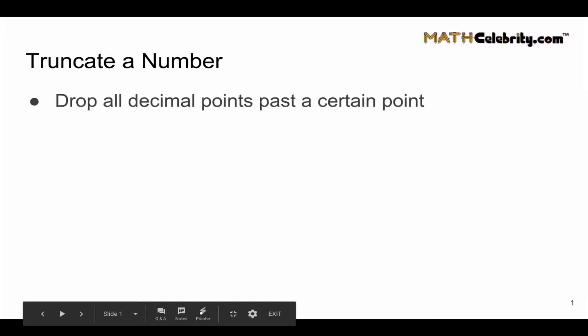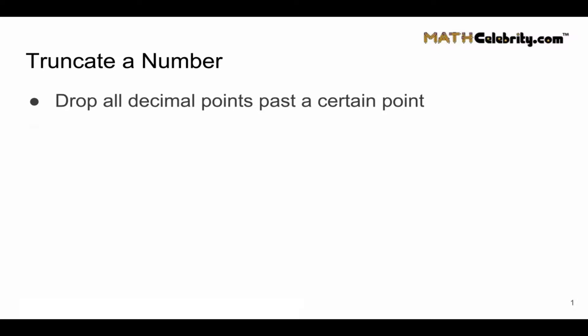So what is truncating a number? It means dropping all decimal points past a certain point. You're not rounding anything. You're keeping the numbers as is.